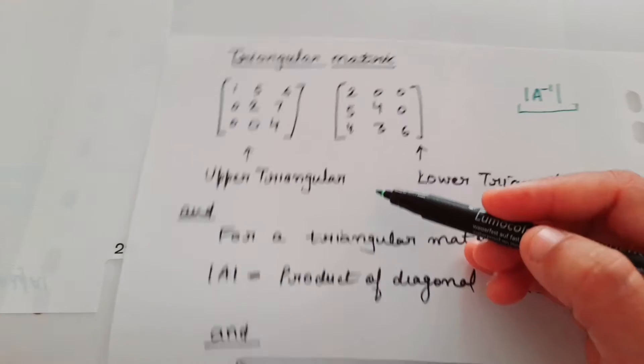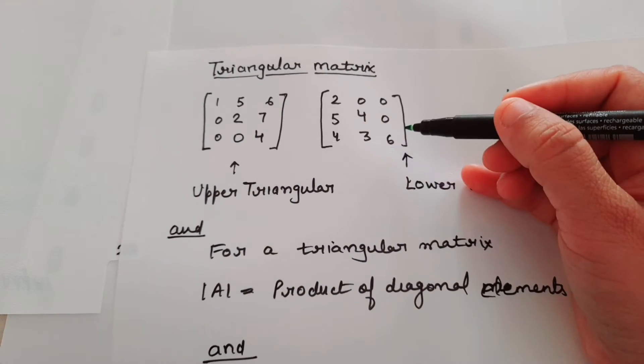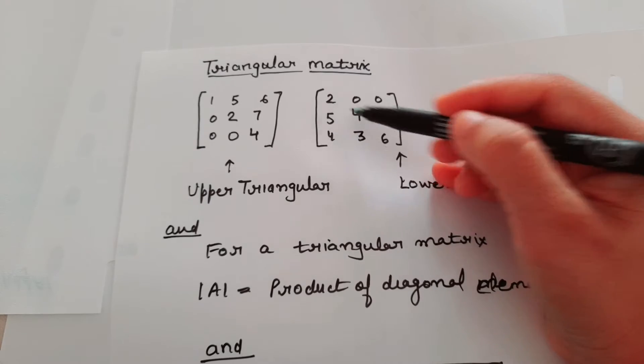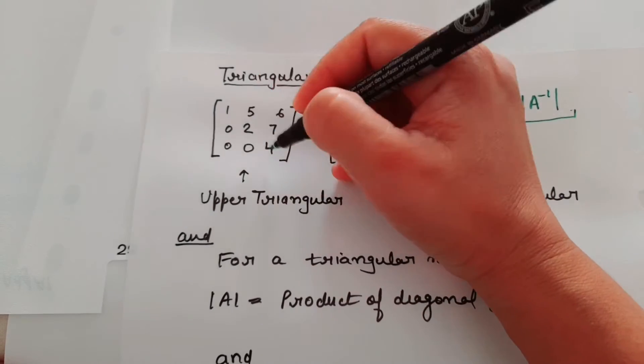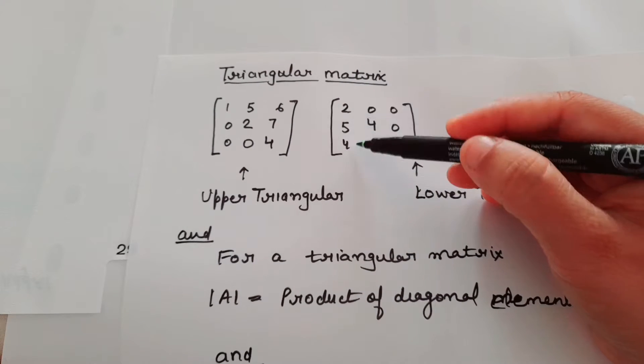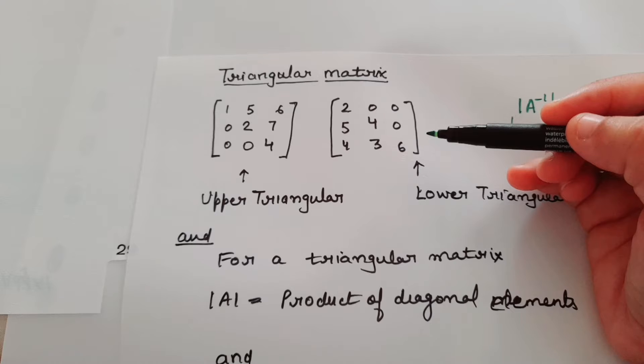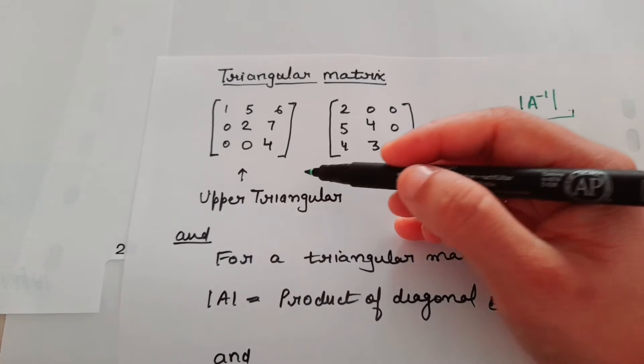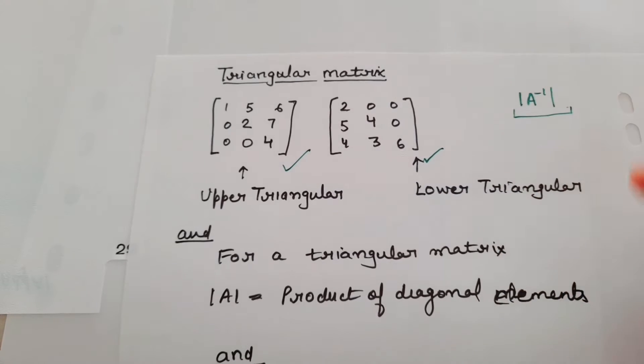Suppose you have these type of matrices. If we have these type of matrices which are forming a triangle, like this is forming a triangle here and this is forming a triangle here. These type of matrices are called triangular matrices and we all know about these. This is upper triangular matrix and this is lower triangular matrix.